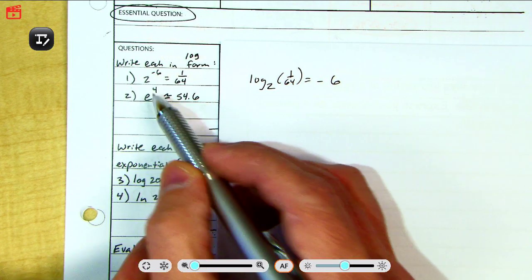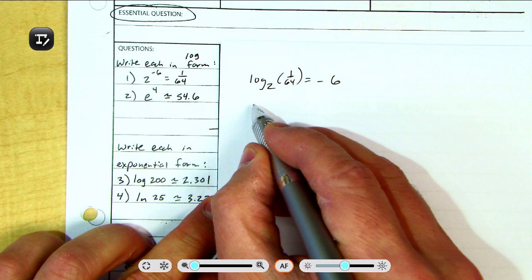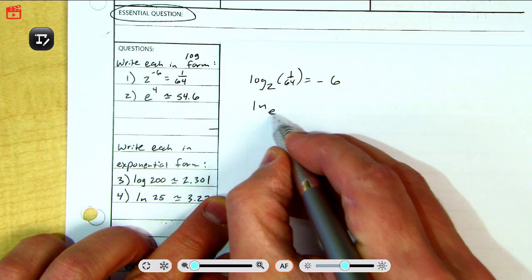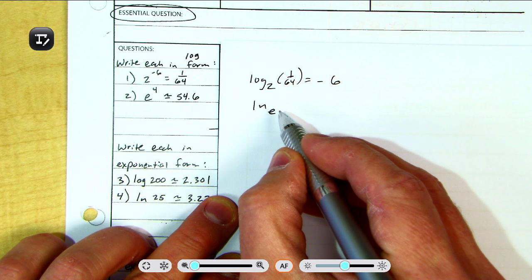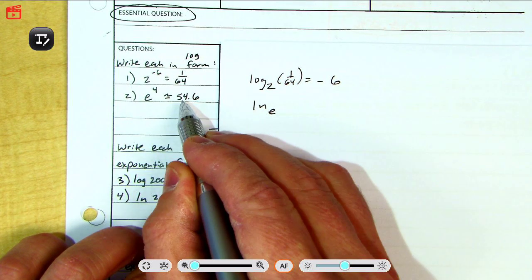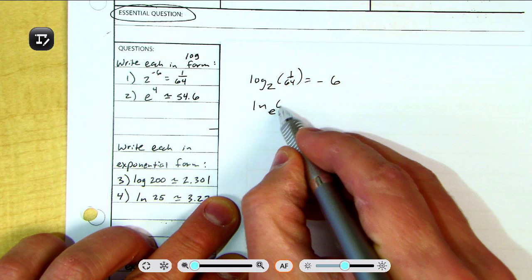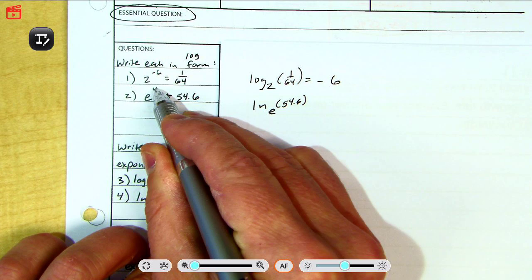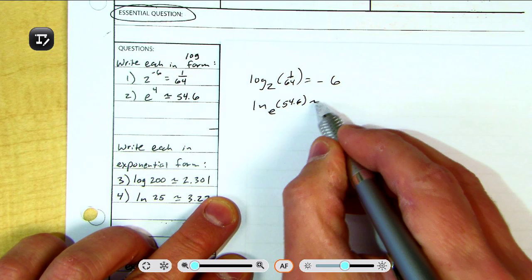If you see an e, you're going to start off not with the word log. You're going to start with ln, like that. And you can write the base down there if necessary. For ln, you don't have to. But we always start at the base. We go under the equal sign. So I'm going to write in parentheses 54.6. And then after you go under, you loop it back to the exponent and say that's approximately 4.